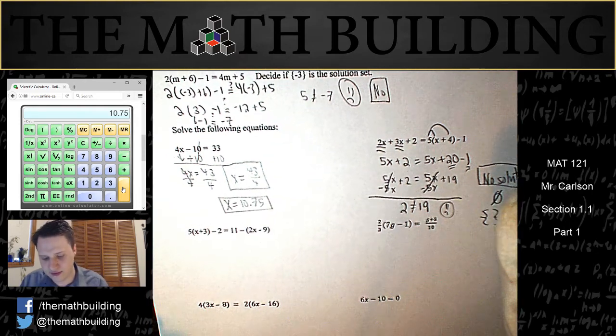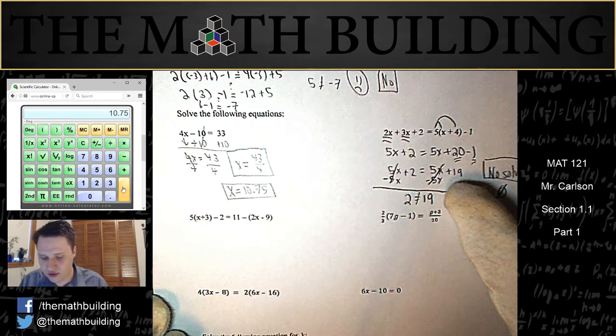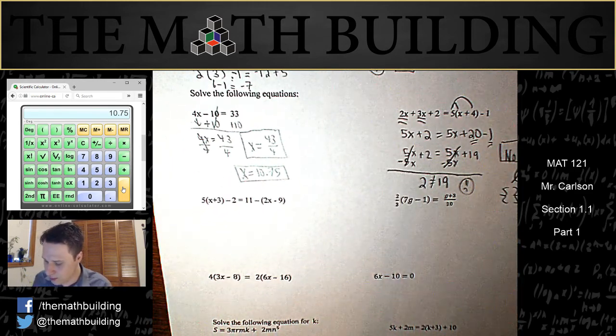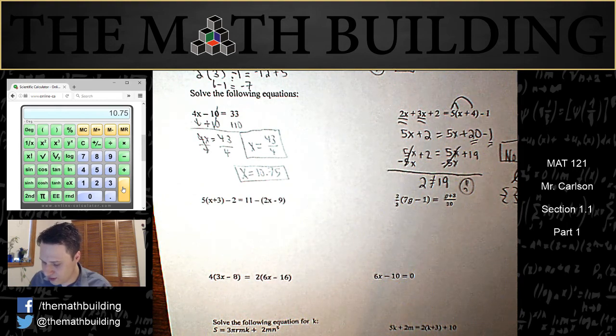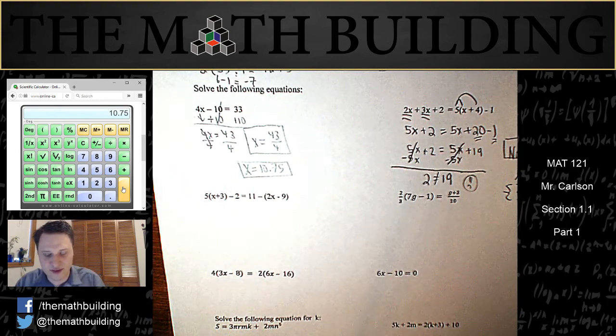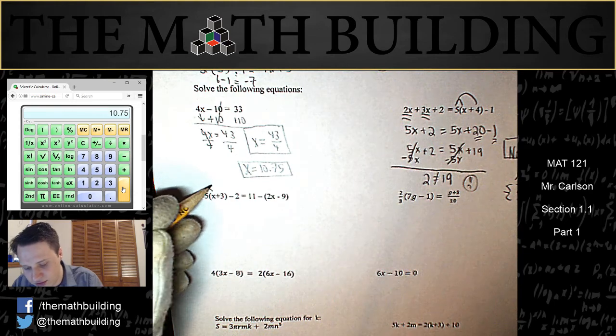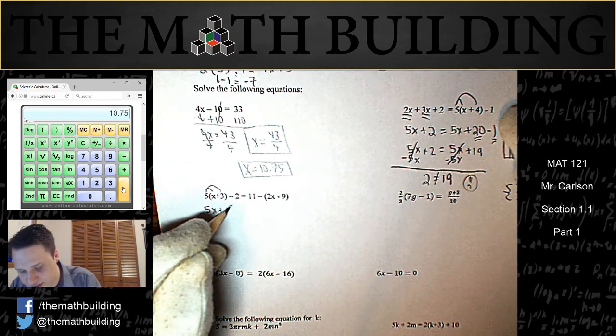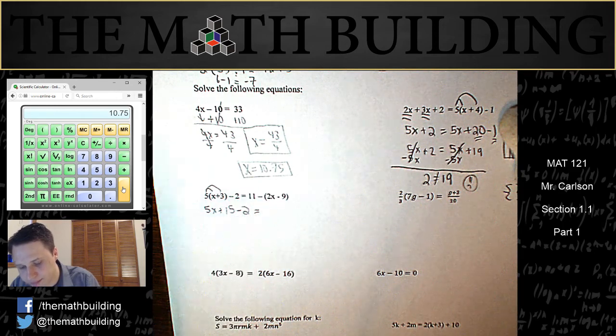You will be much more likely to get the right answer if you do that. Let's try the next one. We have 5 times x plus 3 minus 2 is equal to 11 minus 2x minus 9. Let's simplify the left hand side a little bit by doing the distributive property, which will give me 5x plus 15 minus 2.